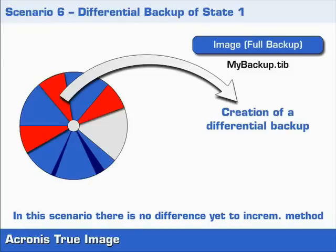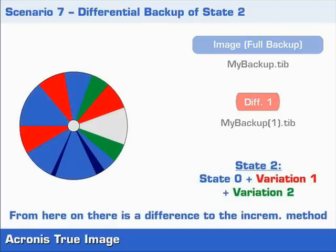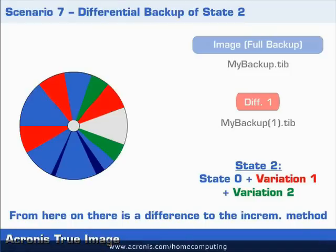They are marked in red. So the resulting Differential Archive file has the same content and is of the same size as the corresponding incremental archive file. Now when we do the second Differential Backup where the partition is at stage 2, the difference between the two methods will become apparent.